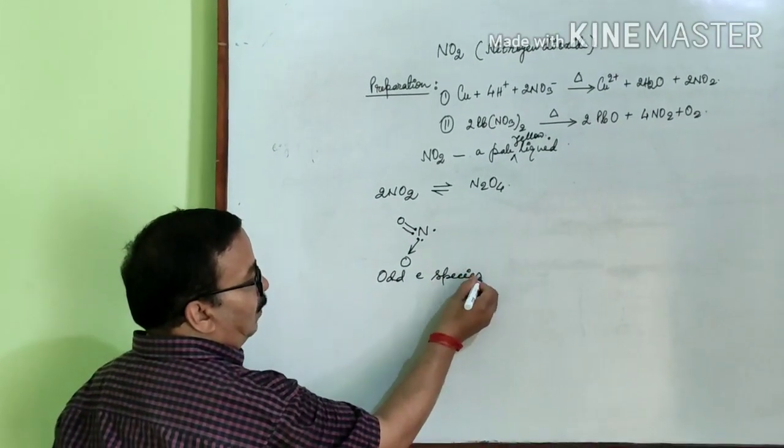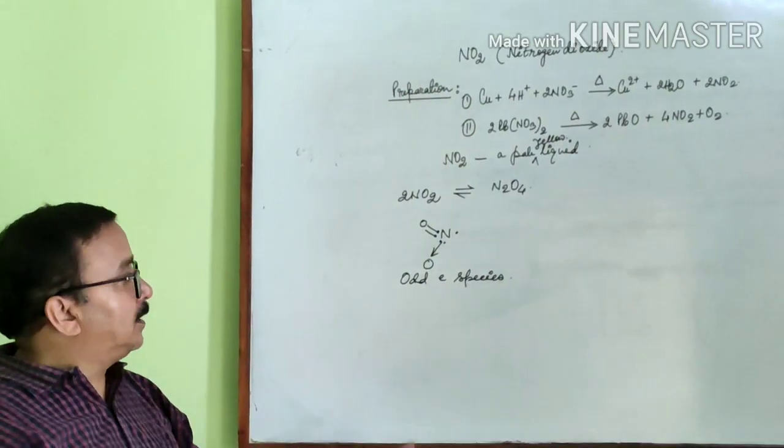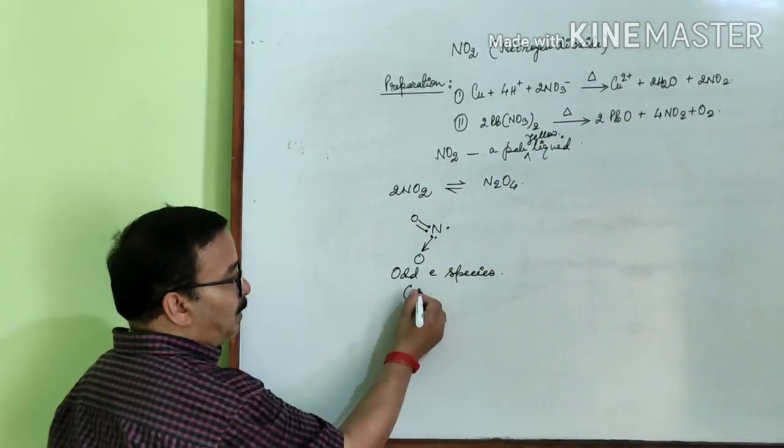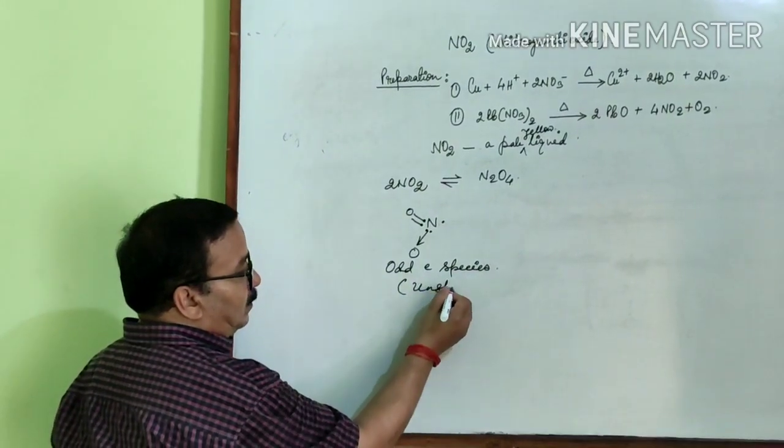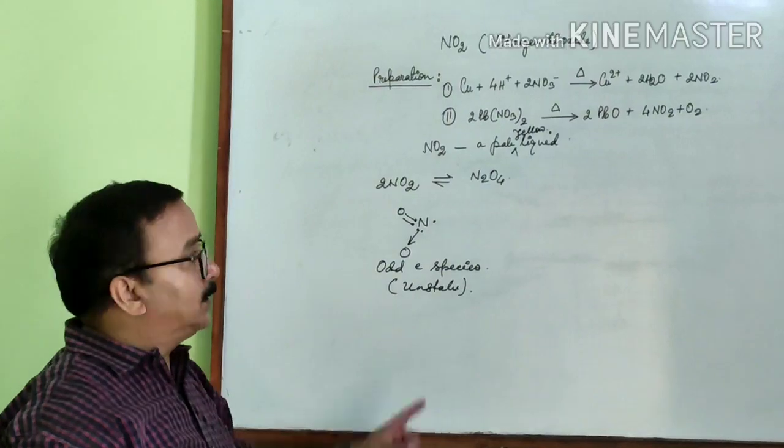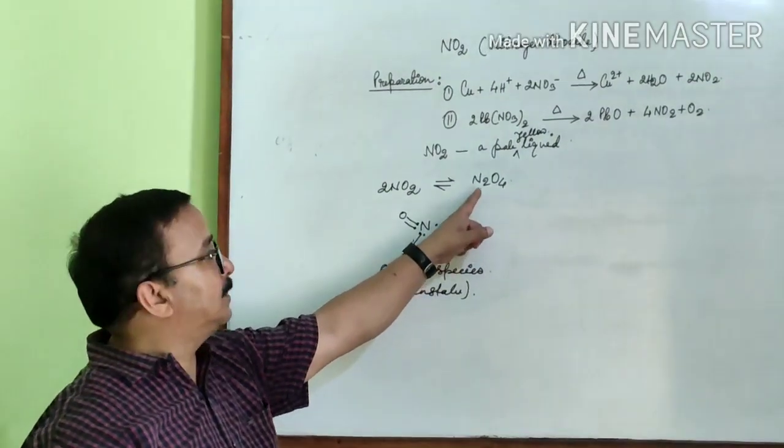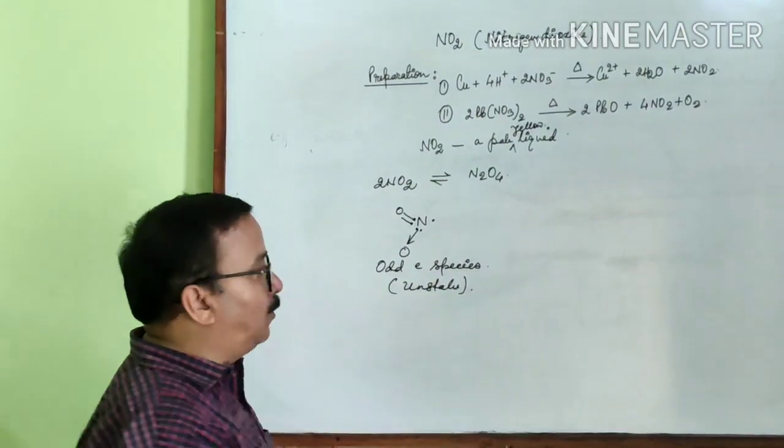Now we know that any odd electron species are unstable. Therefore, in order to become stable, two molecules of NO2 combine together. That is, dimerization takes place and N2O4 is formed.